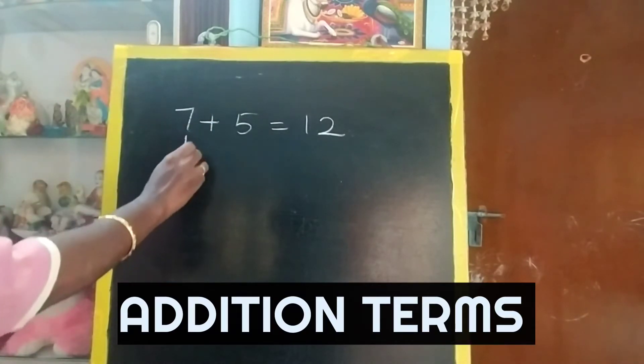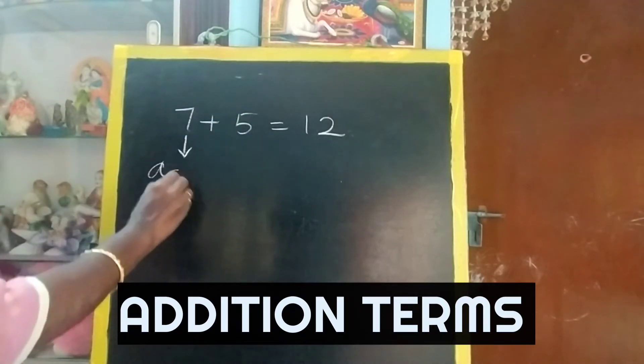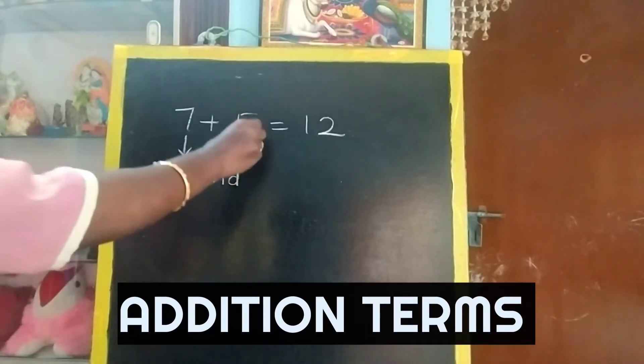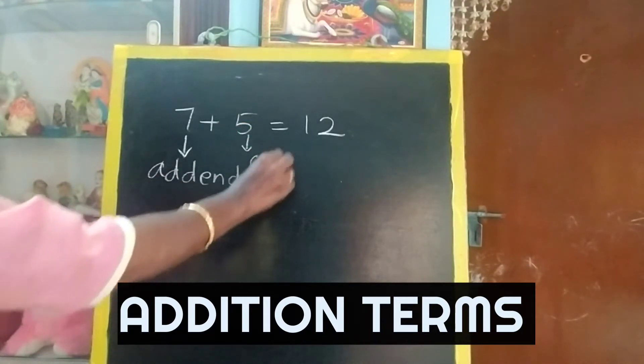The number which we are adding is called as addend. A-D-D-E-N-D. Addend. This is also called addend only.